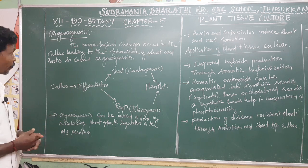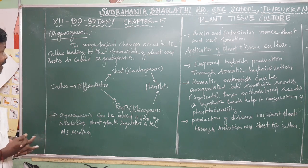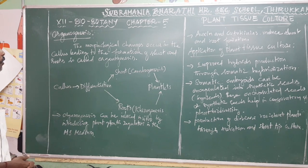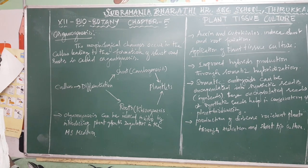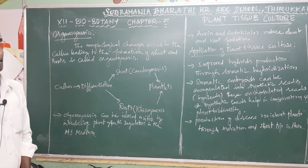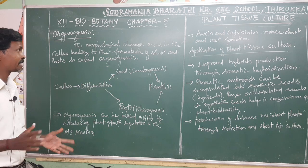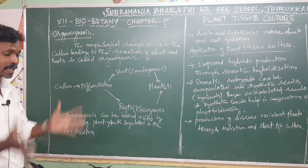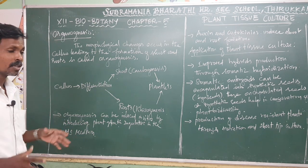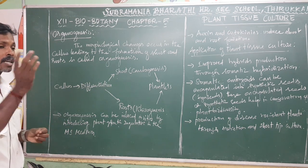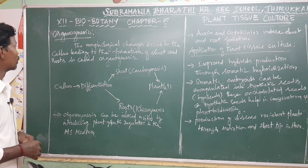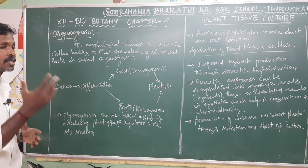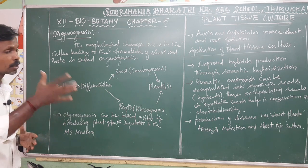The morphological changes occur in the callus leading to the formation of a shoot and root — this is called organogenesis. The morphological changes occur in the callus. It is called organogenesis; that leads to the formation of a shoot and root.